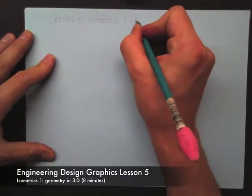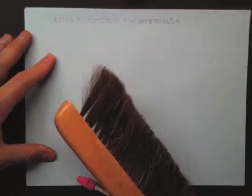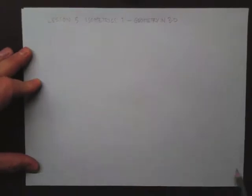Welcome to Lesson 5 of Engineering Design Graphics. Today we're going to be talking about drawing in isometric.